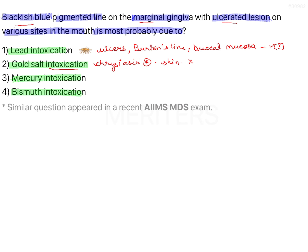Mercury intoxication, or mercurialism, can occur commonly in the mouth because of amalgam. There is ulceration of the gingiva and a bluish-black pigmentation similar to what we see in lead. However, in mercury intoxication, this pigmentation is not linear — it is more diffuse in presentation. There is also loosening of teeth leading to exfoliation.